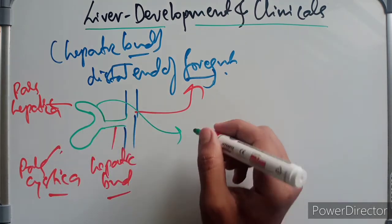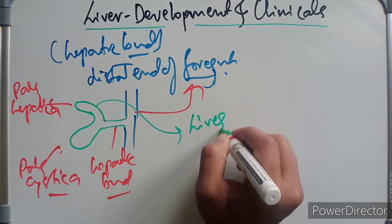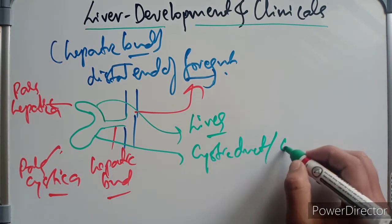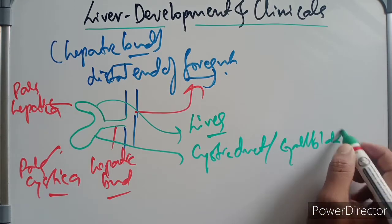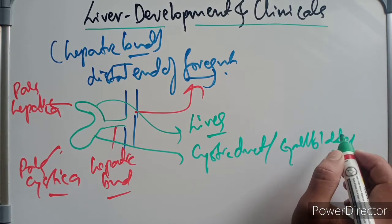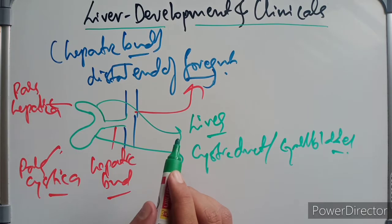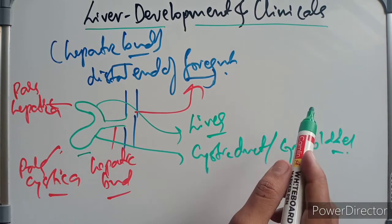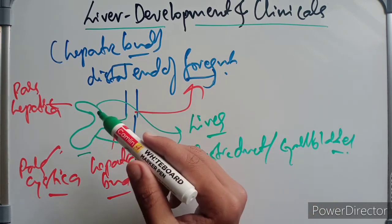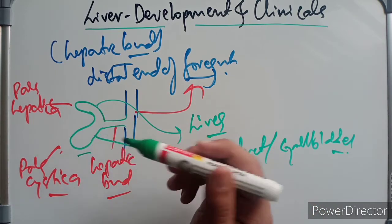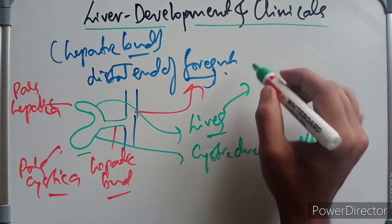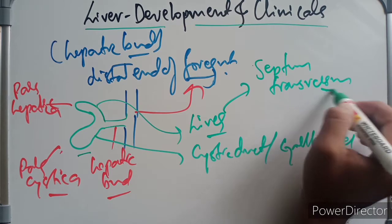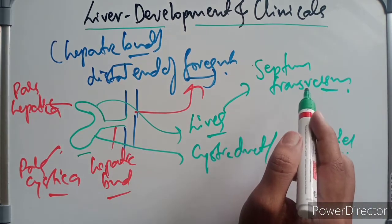The fate of these two buds: the pars hepatica will develop into the complete liver, while the pars cystica will develop into the cystic duct along with the gallbladder. The pars cystica forms the cystic bud and the gallbladder.